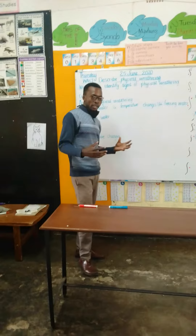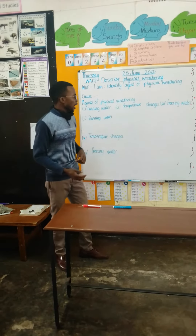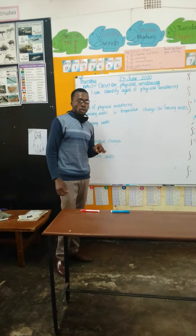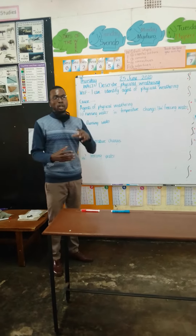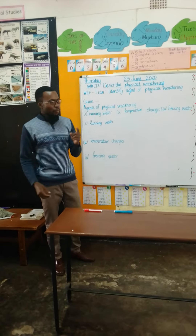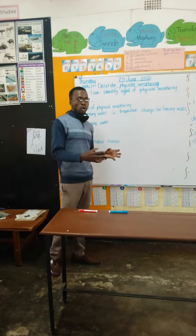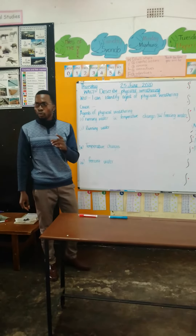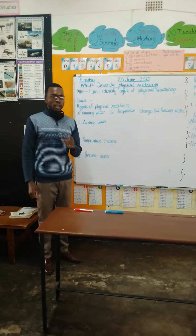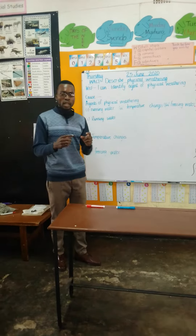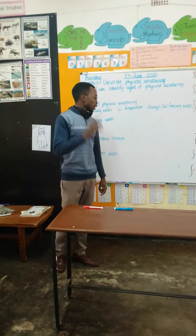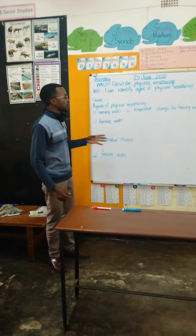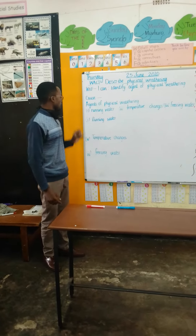When it rains, water flows, and the water that flows will have a lot of power. And this power will cause the rocks to move. As rocks move, they bump into each other, causing the rocks to break. So this is how physical weathering is caused by running water.